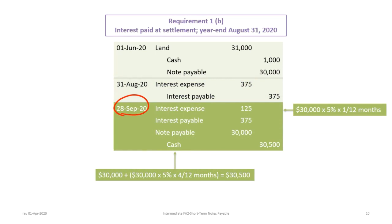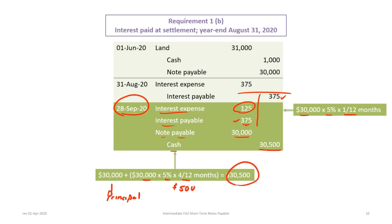Our final entry to settle the note is on September 28th, 2020. We debit interest expense for the remaining $125 (one month: $30,000 × 5% × 1/12), debit interest payable for $375 to exhaust that account, debit note payable for $30,000 to remove it, and credit cash for $30,500 — that's the $30,000 principal plus $500 in total interest ($30,000 × 5% × 4/12 months).